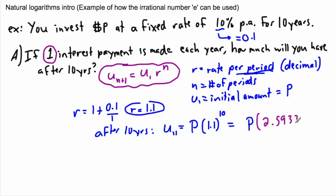So the multiplier here is 2.59374... and that's how much you have after 10 years with only one interest payment per year. Now let's do this again but with more payments per year — in other words, we're going to compound the interest more times per year, recalculating it more than once.